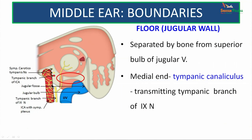The floor is otherwise called the jugular wall because it is related to the jugular fossa of the petrous bone. It is separated from the superior bulb of the jugular vein by a small partition of bone. At the medial end of that bone, there is a small fissure called the tympanic canaliculus, which transmits the tympanic branch of the glossopharyngeal nerve.